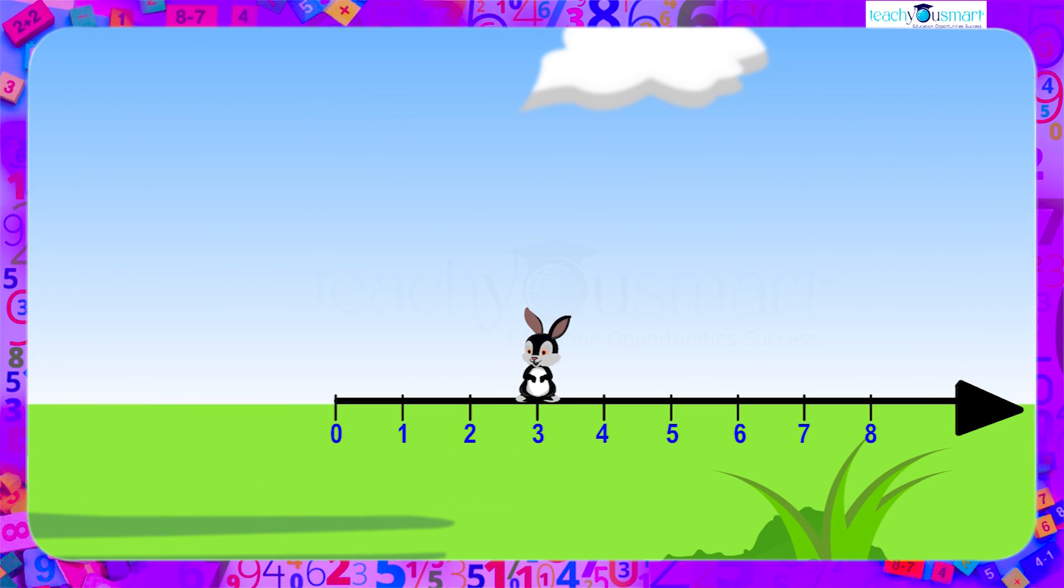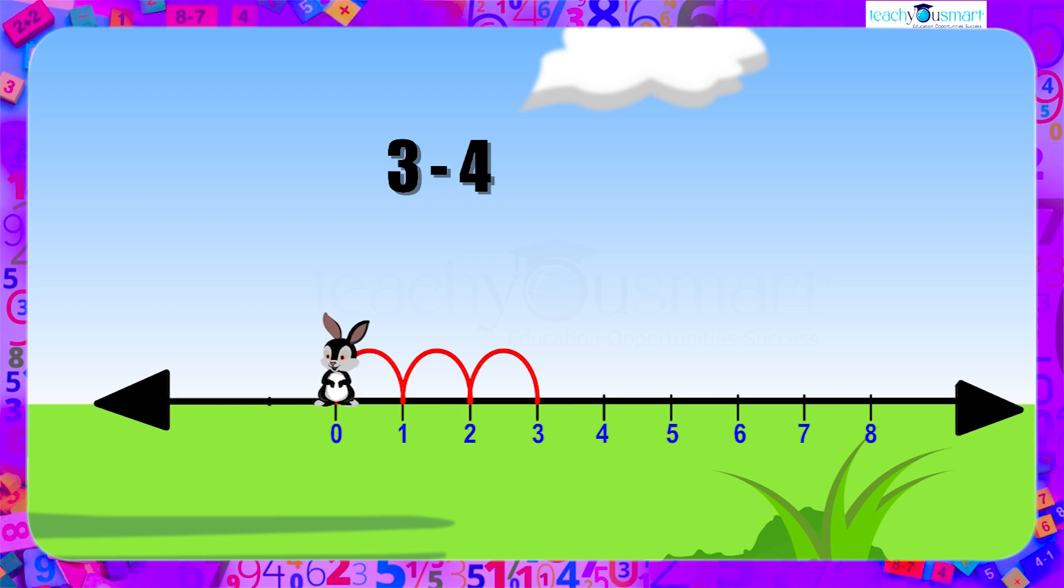Now what happens when we subtract a bigger number from a smaller number when we subtract 4 from 3? Let's start moving from 3 towards left side. First step to the left would be 2, second step would be 1, and third step would be 0. Now what do we do? We have to move one more place to the left of 0 to subtract 4 from 3. This number to the left of 0 will be marked as minus 1. That is, we get 3 minus 4 equals minus 1.